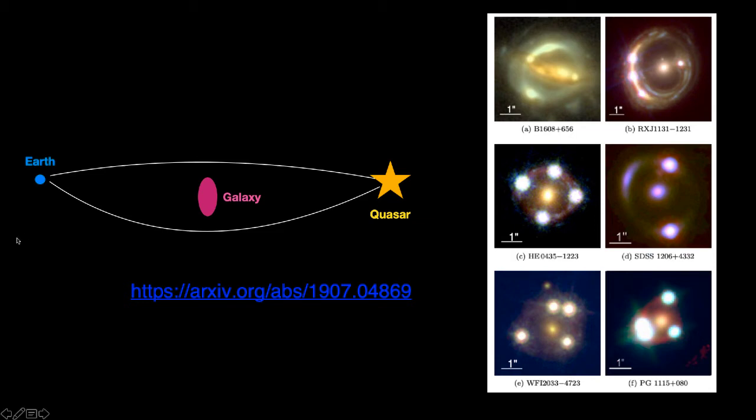Then you combine it with gravitational lens modeling. You know roughly how far away the quasar is, how far away the galaxy is, you know the positions of the images and therefore you can work out, depending on Hubble's constant, how big the time difference should be. You can compare it to how big the time difference actually is and use that to measure Hubble's constant.